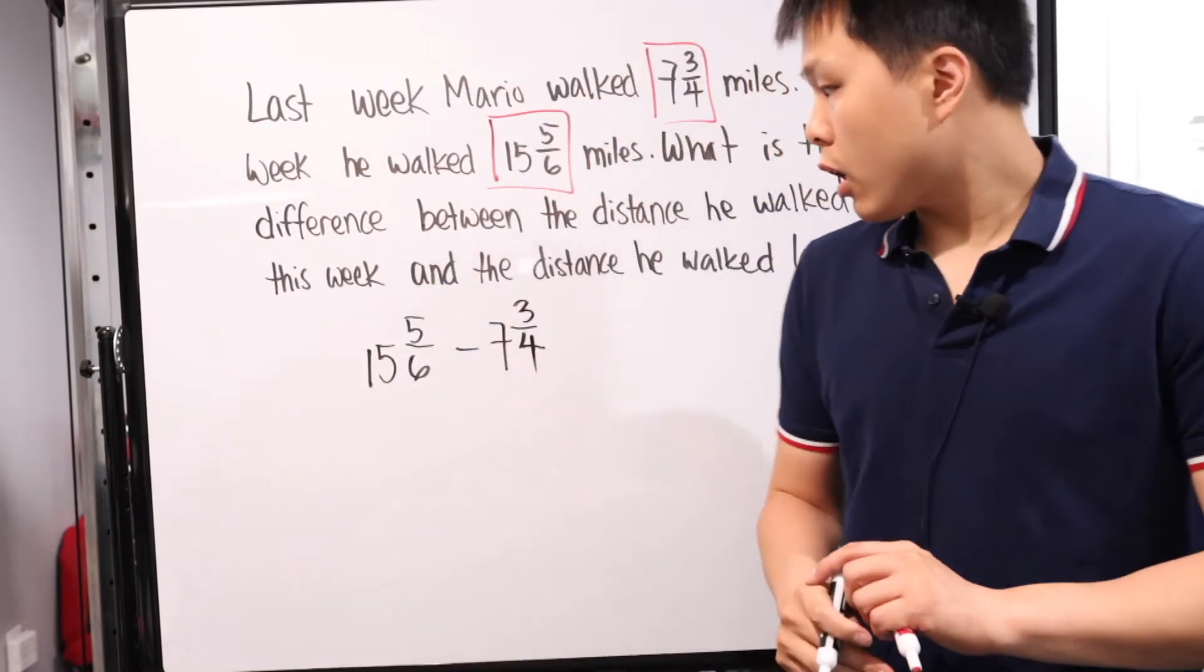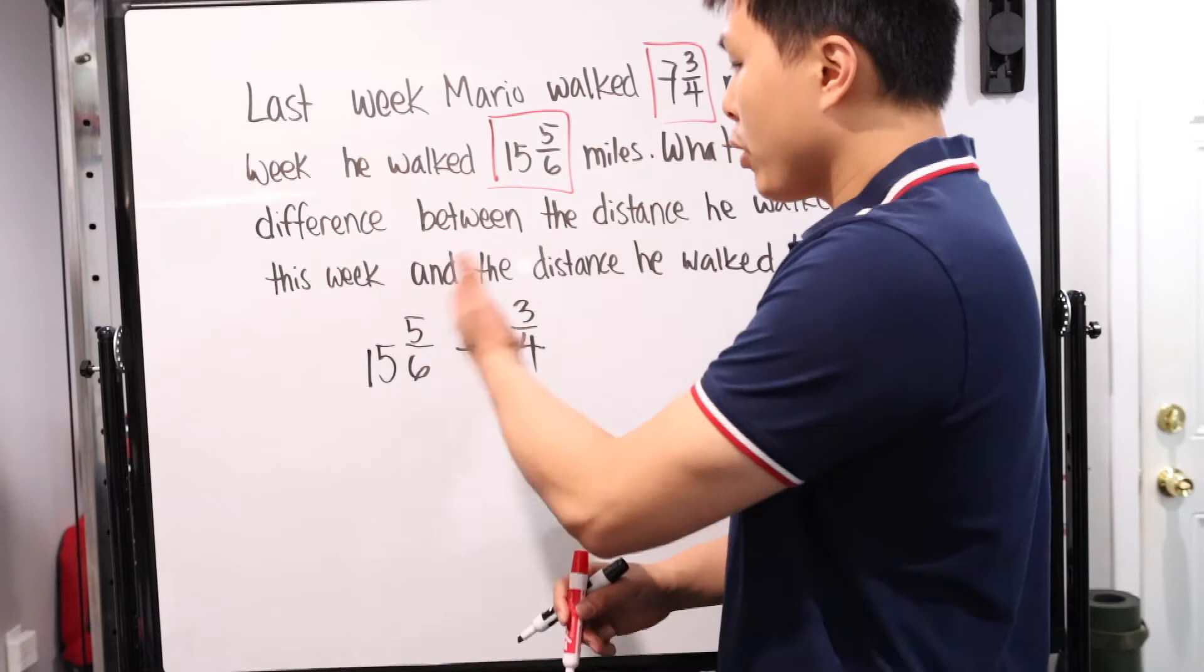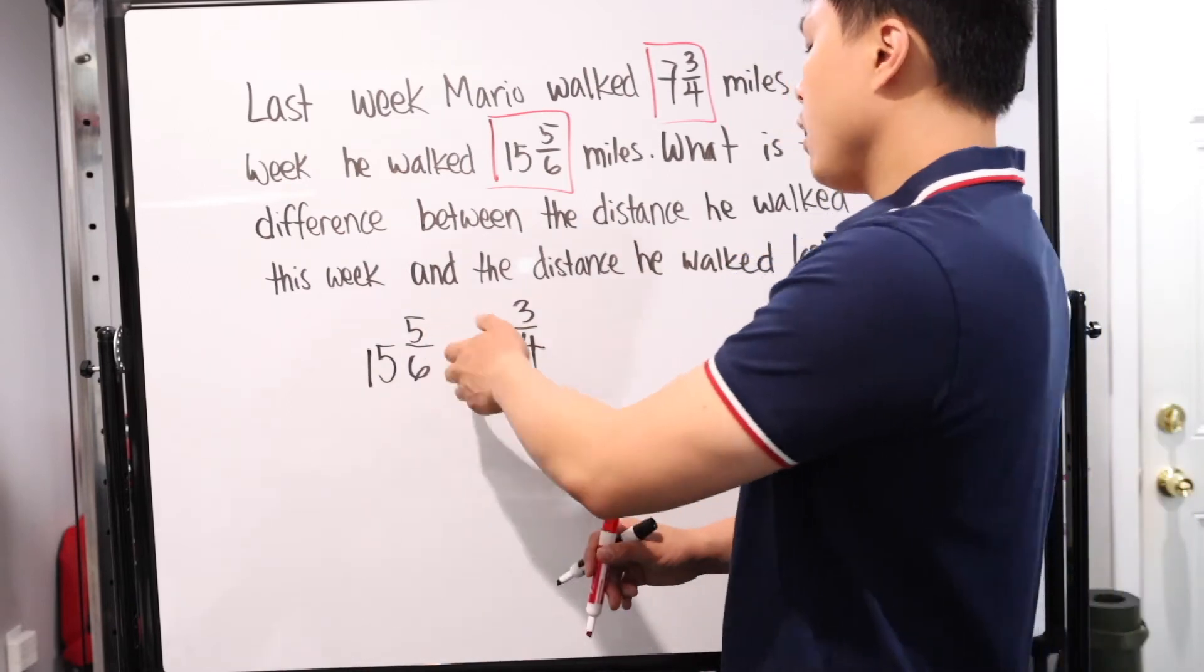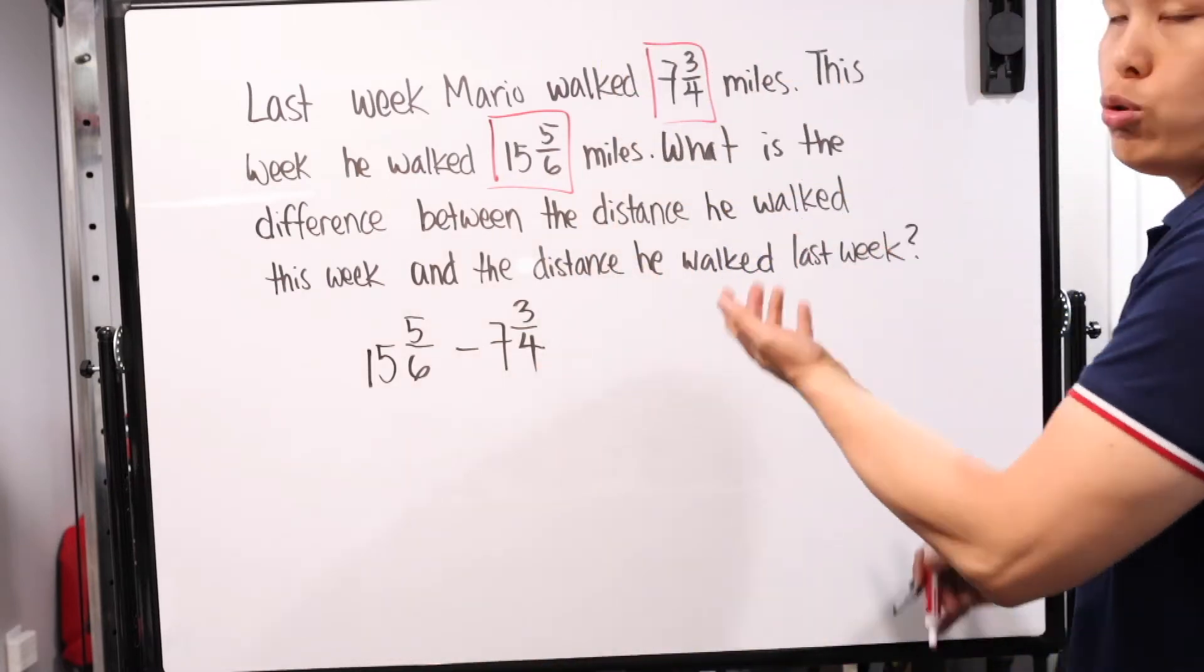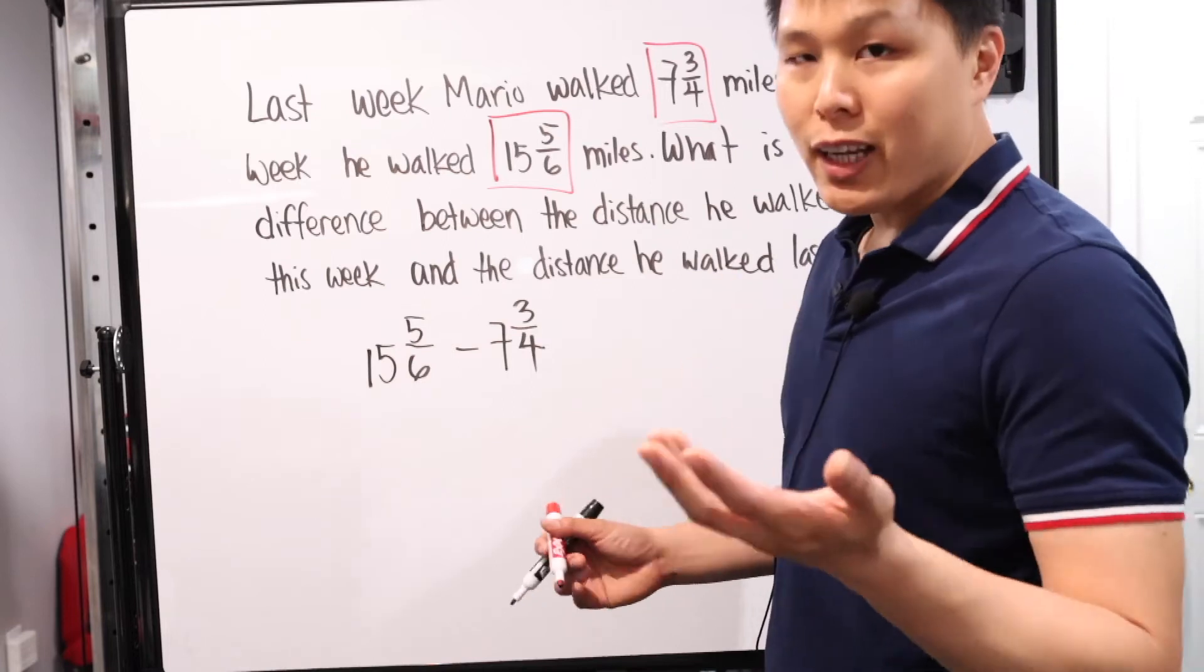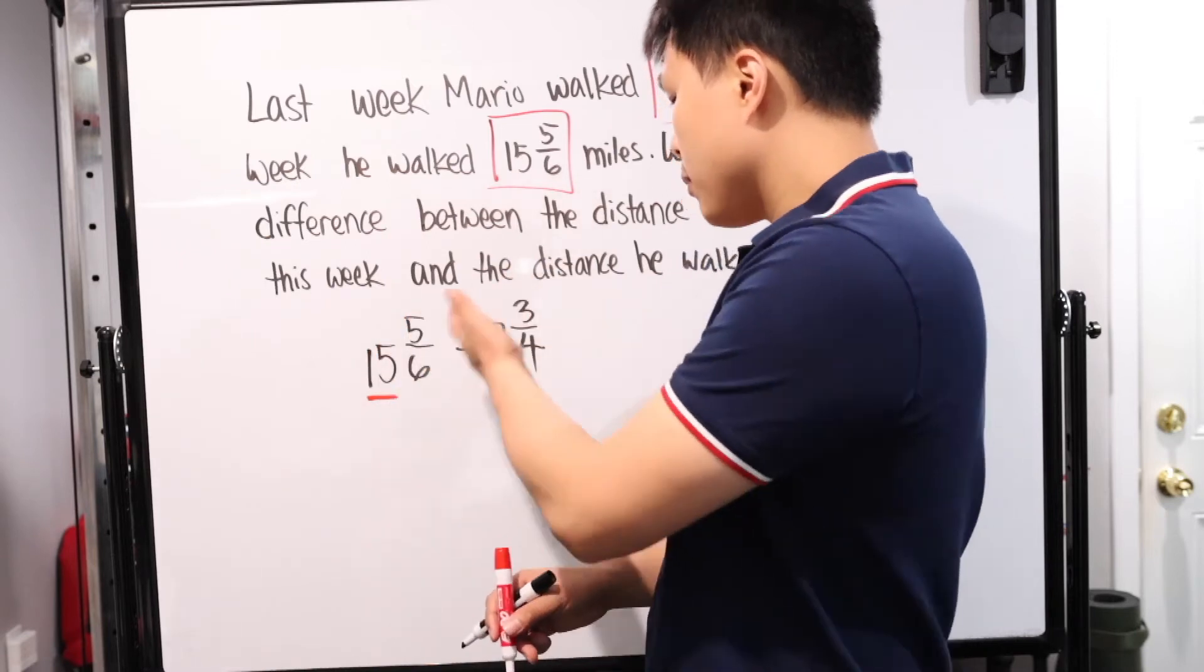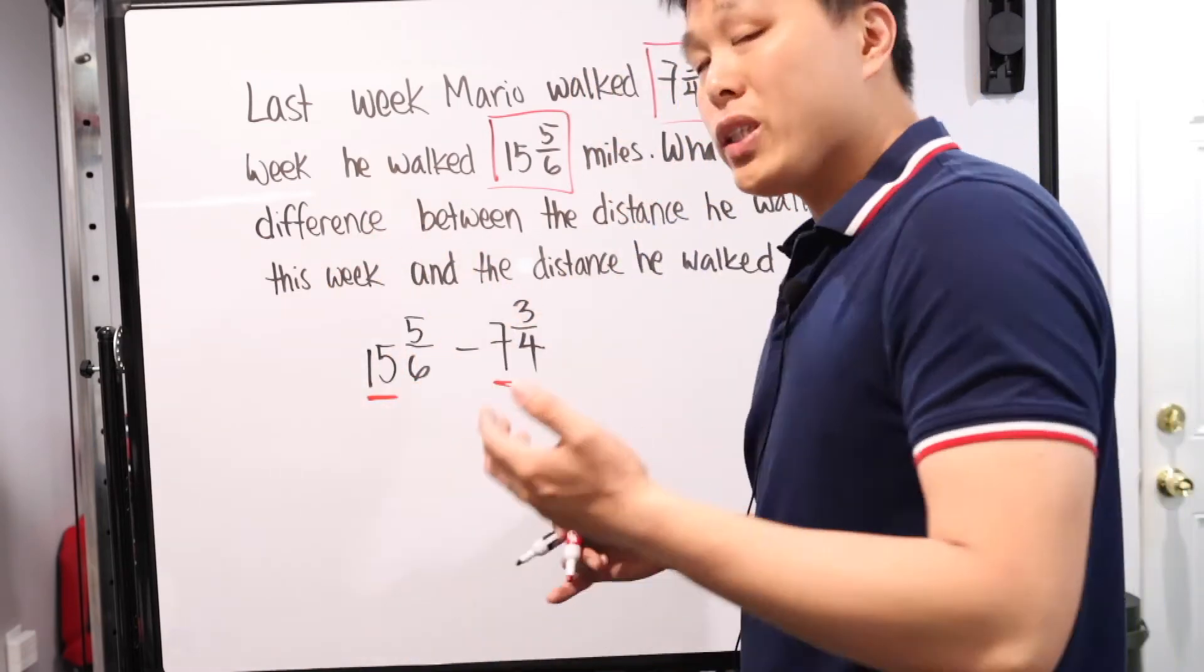15 and 5/6 minus 7 and 3/4. We have to be comfortable with mixed fractions, being able to convert them and then subtract them. A standard way is if you want to convert it all to improper fractions: 15 times 6 plus 5 gives you some number over 6. Then you do the same here: 4 times 7 which is 28, plus 3, divided by 4. That gives your improper fraction. Then you subtract and simplify. What I usually do is probably not the most recommended. You look at the whole numbers and subtract that first, then use the fraction.